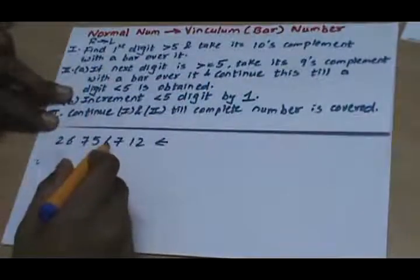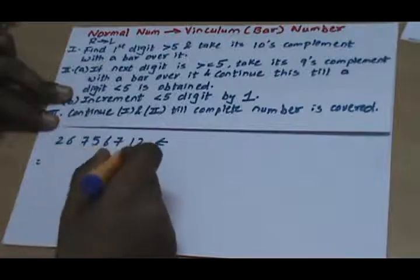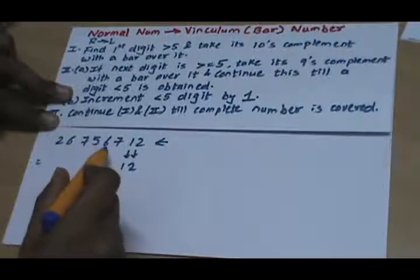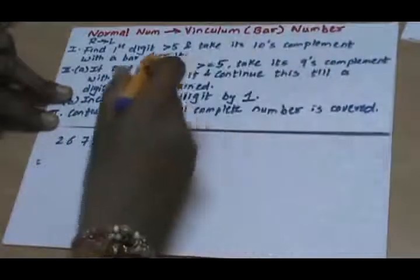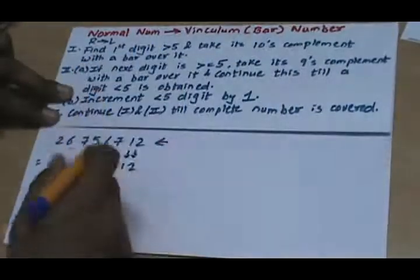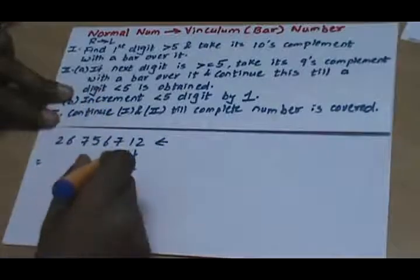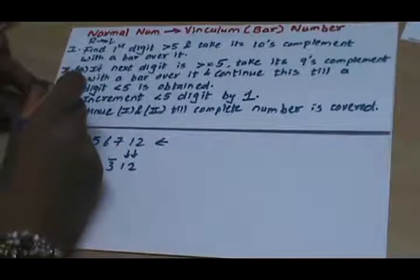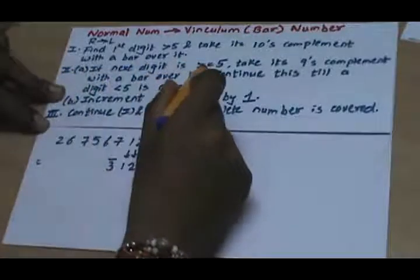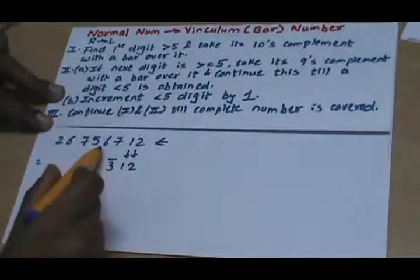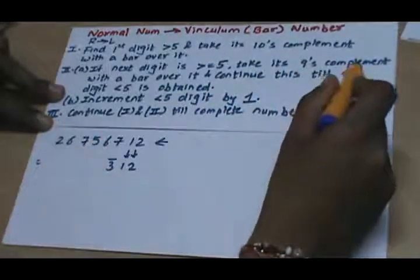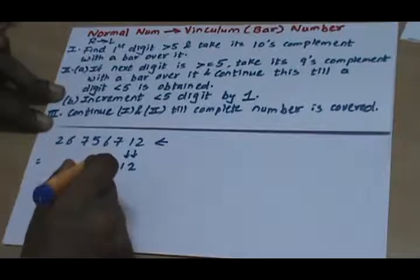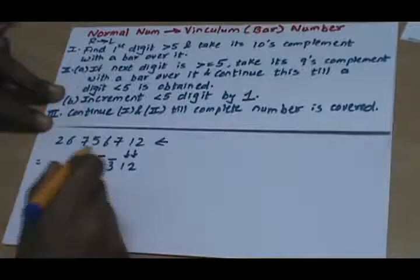The first digit greater than 5 is 7, so we write 1 and 2 as they are. We take the tens complement of that digit and write a bar over it — tens complement of 7 gives 3-bar. We go to step 2a if the next digit is again greater than or equal to 5. Yes, in this case it is 6, so we take its nines complement. Nines complement of 6 gives 3-bar.